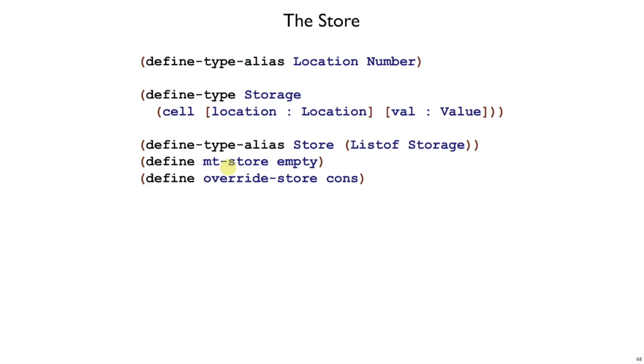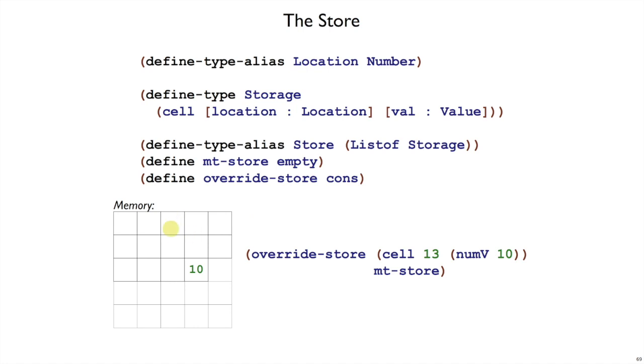In the same way that we had empty env. And when we allocate a cell or change a cell, we'll use override storage. It just conses onto our list of storage. So for example, if we want to represent this picture of memory where there's nothing interesting except this position right here has a 10 in it, then we would represent that by, let's say that's cell number 13. Cell 13 has numv10, right, a capital V value in it.